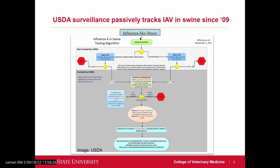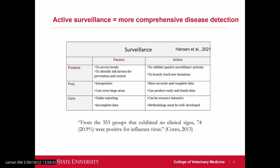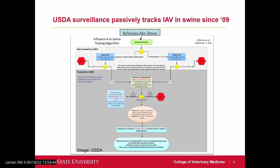Since 2009, the USDA has had a passive surveillance system in place to monitor influenza, represented by this flowchart. Basically, a veterinarian will submit a sample from pigs with influenza-like illness, and if it meets criteria on the detection PCR, then the USDA will actually fund a subtyping PCR, virus isolation, and sequencing of the HA and NA gene segments. Those are then deposited into GenBank to be available for the public.